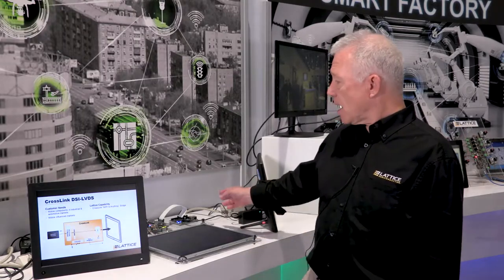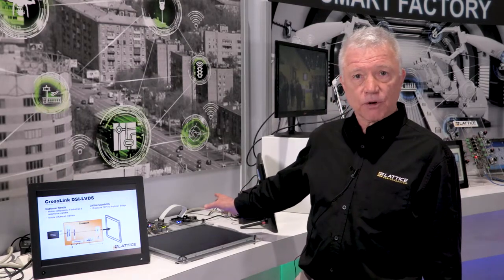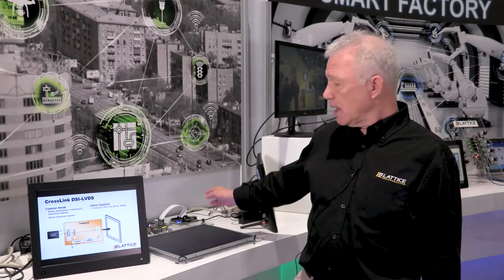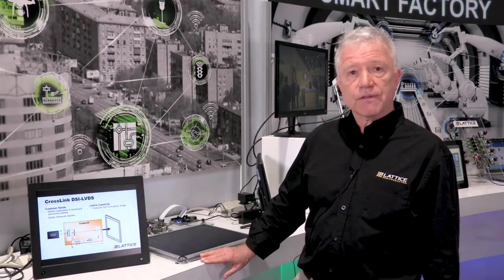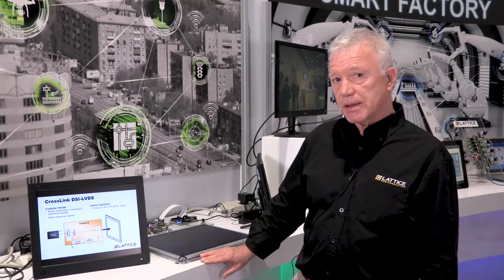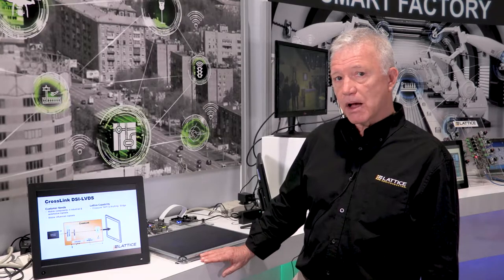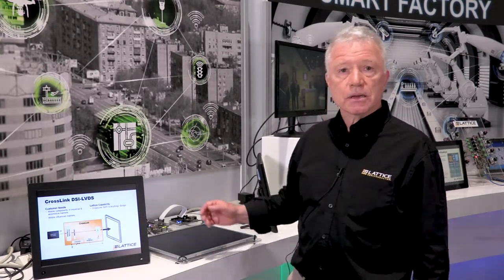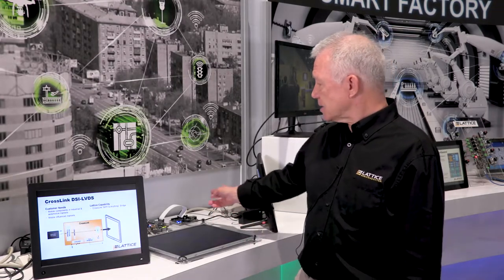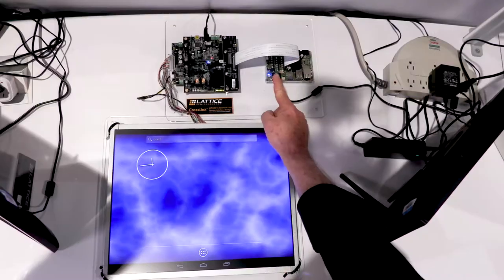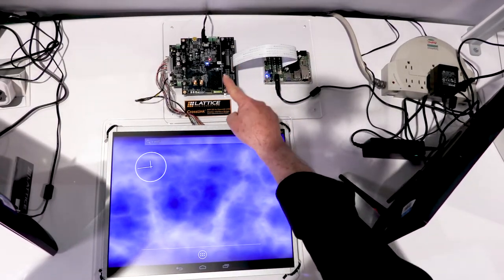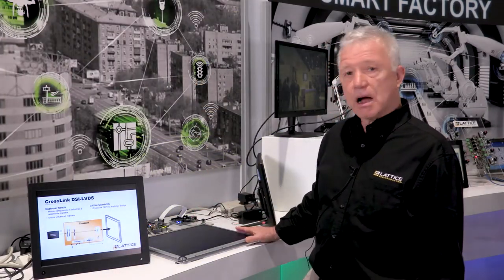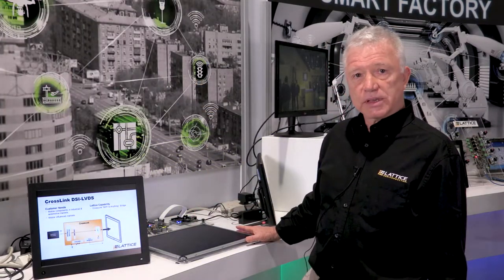In this application, I have a Snapdragon processor that's outputting MIPI DSi, but yet we want to drive an industrial display that requires LVDS input. And so we need a bridge. So in this case, I have DSi going into our Crosslink device. Our Crosslink bridges over to LVDS and we're driving this display here.